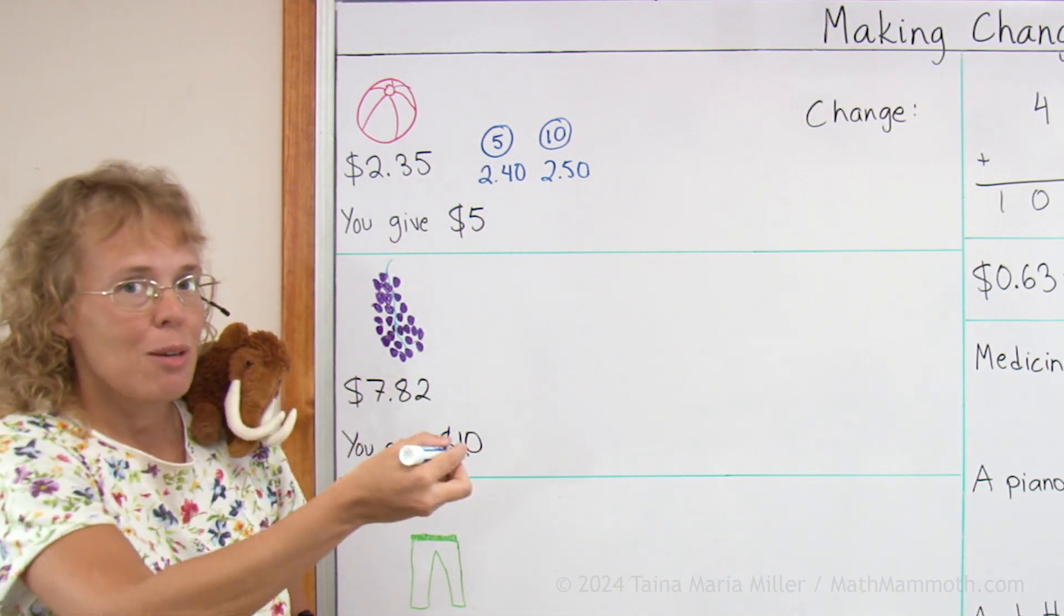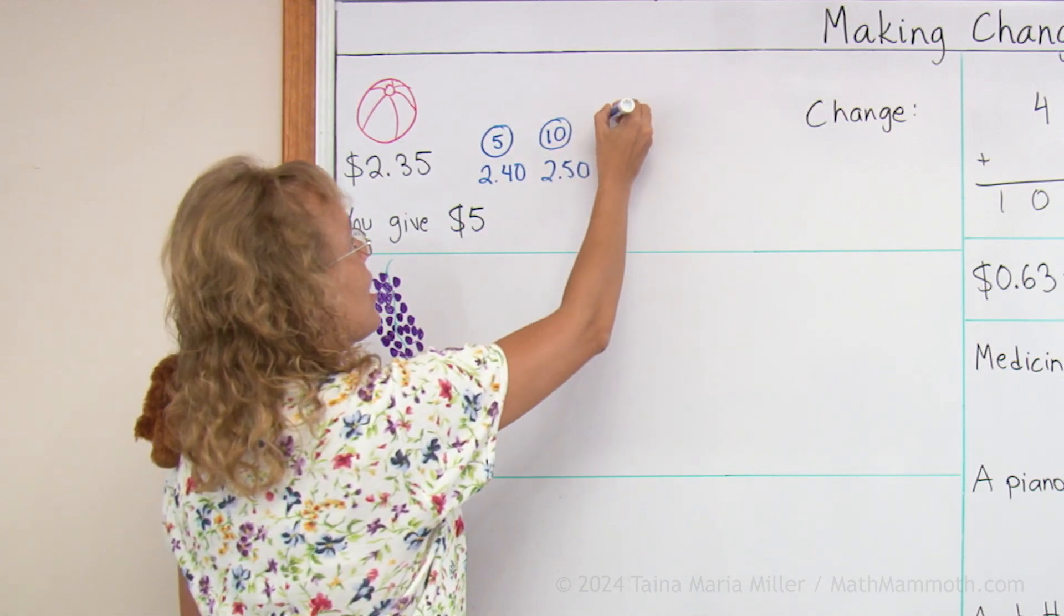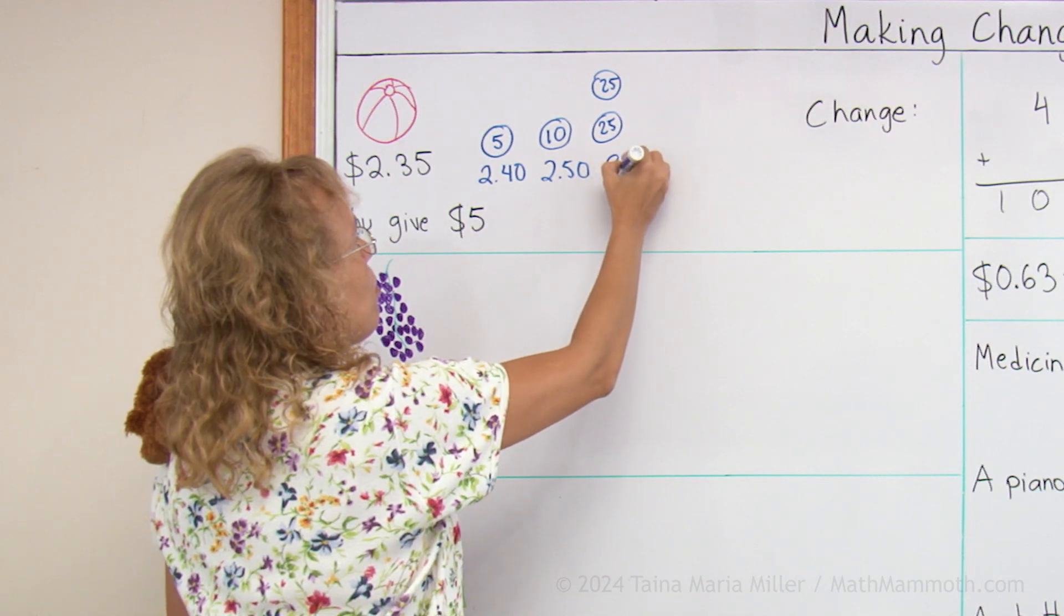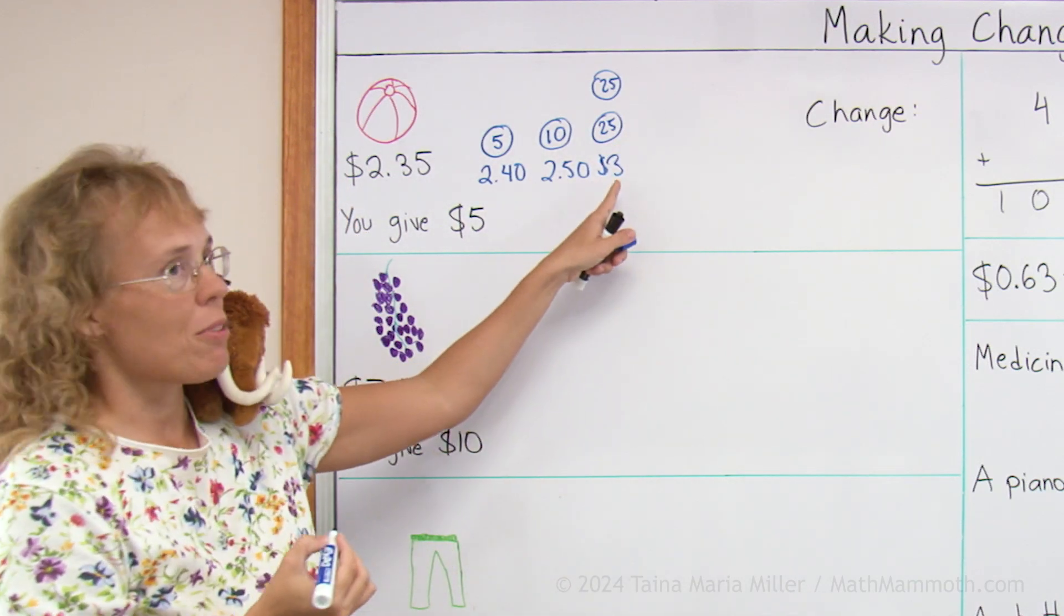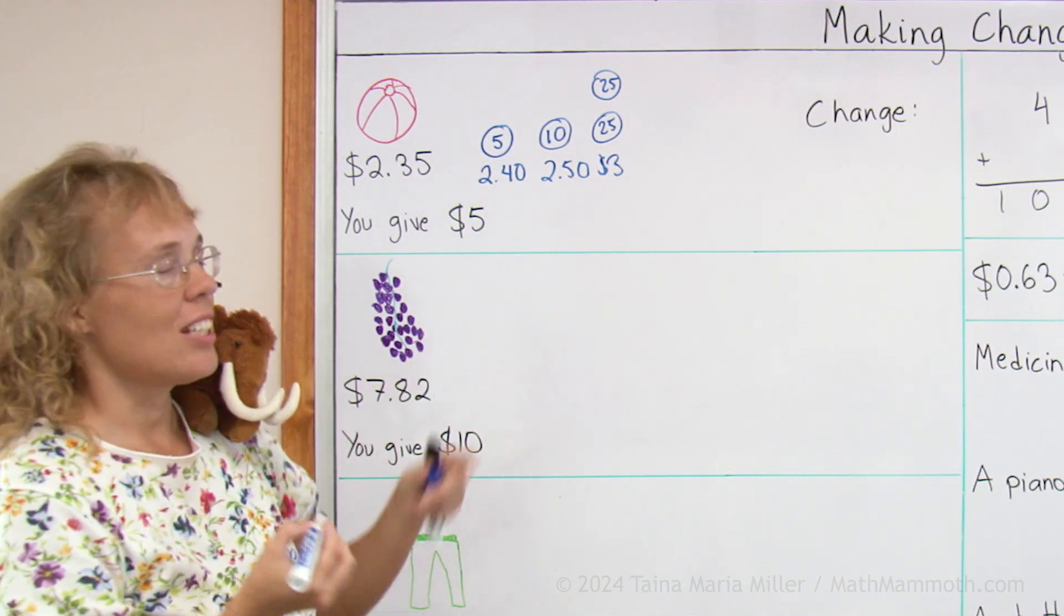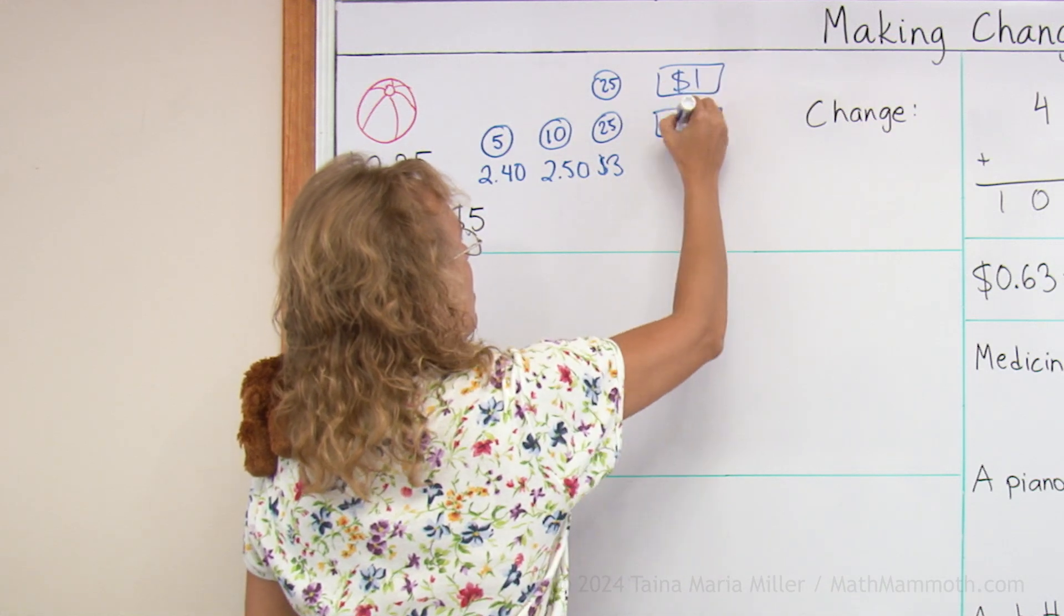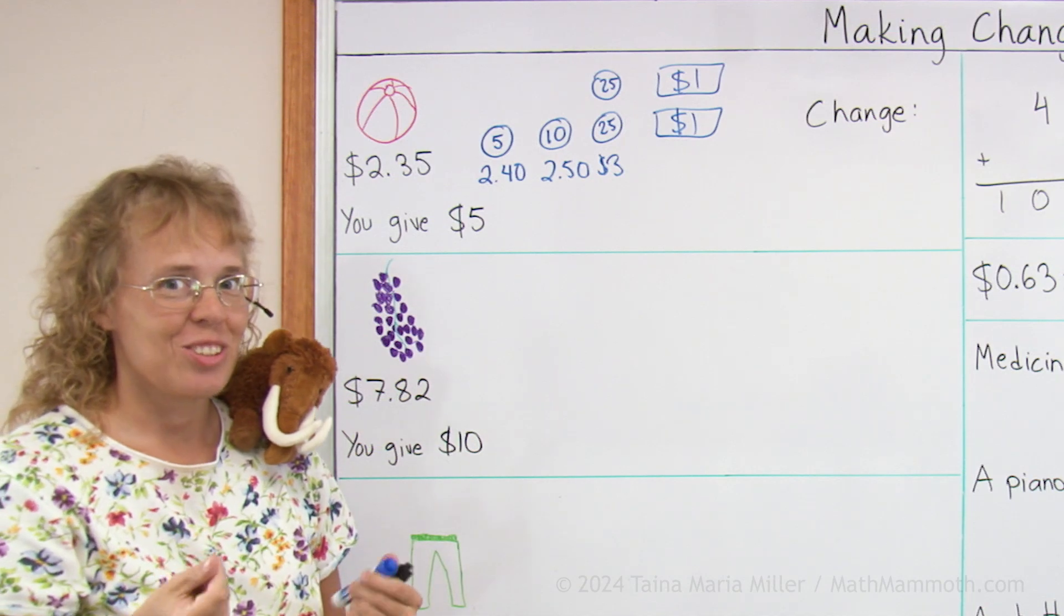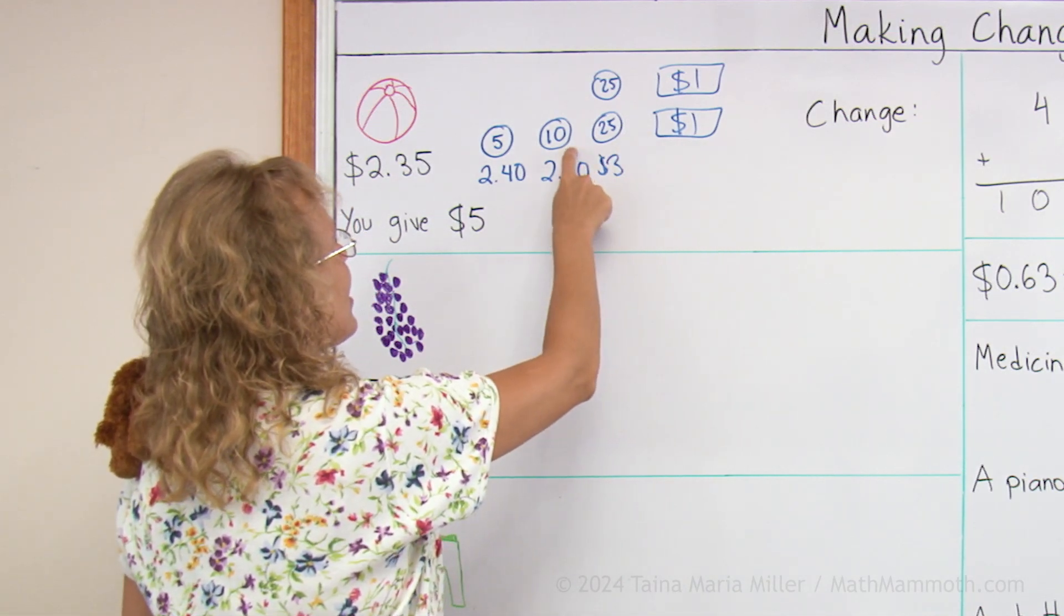And then I go up. I want to go to the next whole dollar to $3.00, so I'll take two quarters. And at that point I am at $3.00. And then from $3.00 to $5.00 I need $2.00. And so all those coins and bills I drew is your change. So the change will be $2.65.